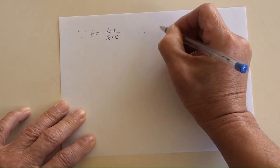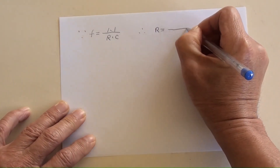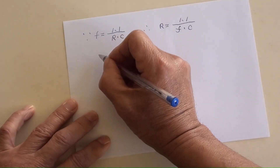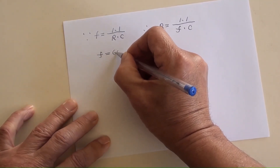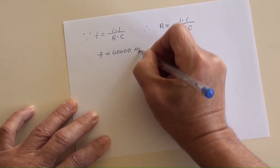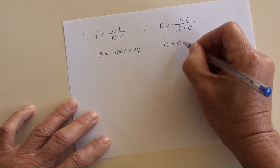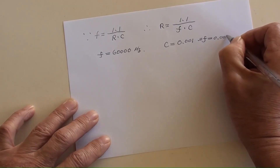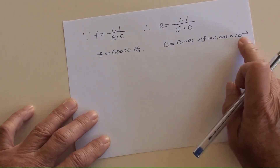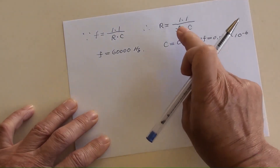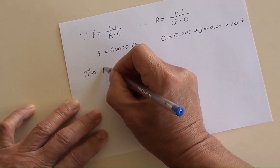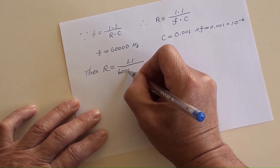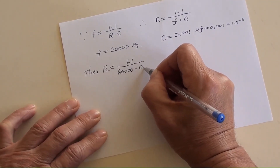Then, R equals 1.1 over F times C. Given F equals 60,000 Hz and C equals 0.001 µF, which can be written as 0.001 times 10 to the power of negative 6 in Farads. Then R equals 1.1 over 60,000 times 0.001 times 10 to the power of negative 6.